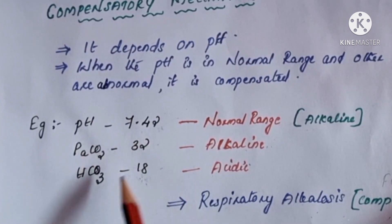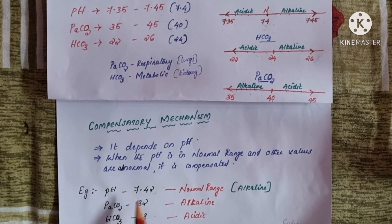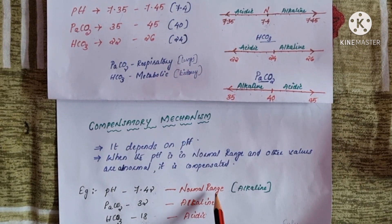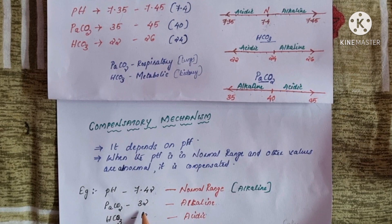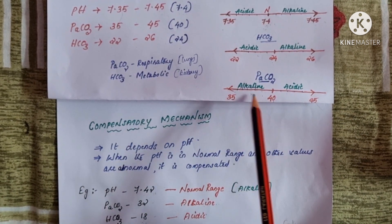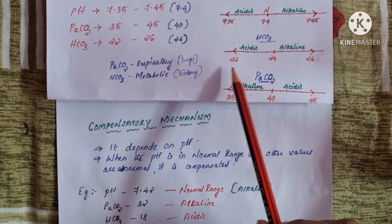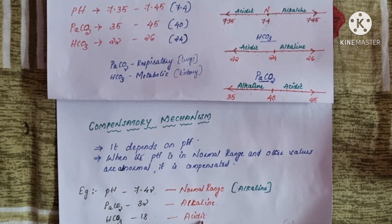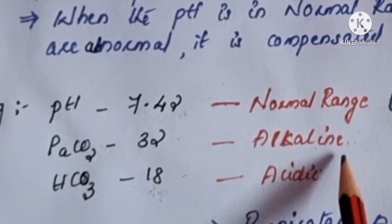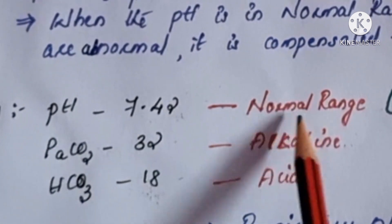Here is an example: pH is 7.42, PaCO2 is 32, and bicarb is 18. pH 7.42 is within the normal range, so I wrote it as normal. PaCO2 is 32, which is below the range of 35–45 — that is alkaline. Bicarb is 18, which is below 24 — that is acidic. So pH is normal, PaCO2 is alkaline, and bicarb is acidic; both PaCO2 and bicarb are altered.